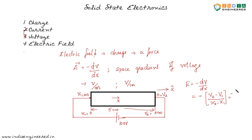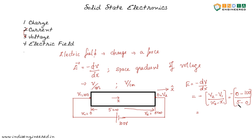So that is equal to minus of: V2 is 0 minus V1 which is 100, divided by x2 that is 5 centimeters minus x1 which is 0. So that is equal to minus 100 divided by 5, which is minus 20, and these two minuses cancel, and we get 20 volt per centimeter.